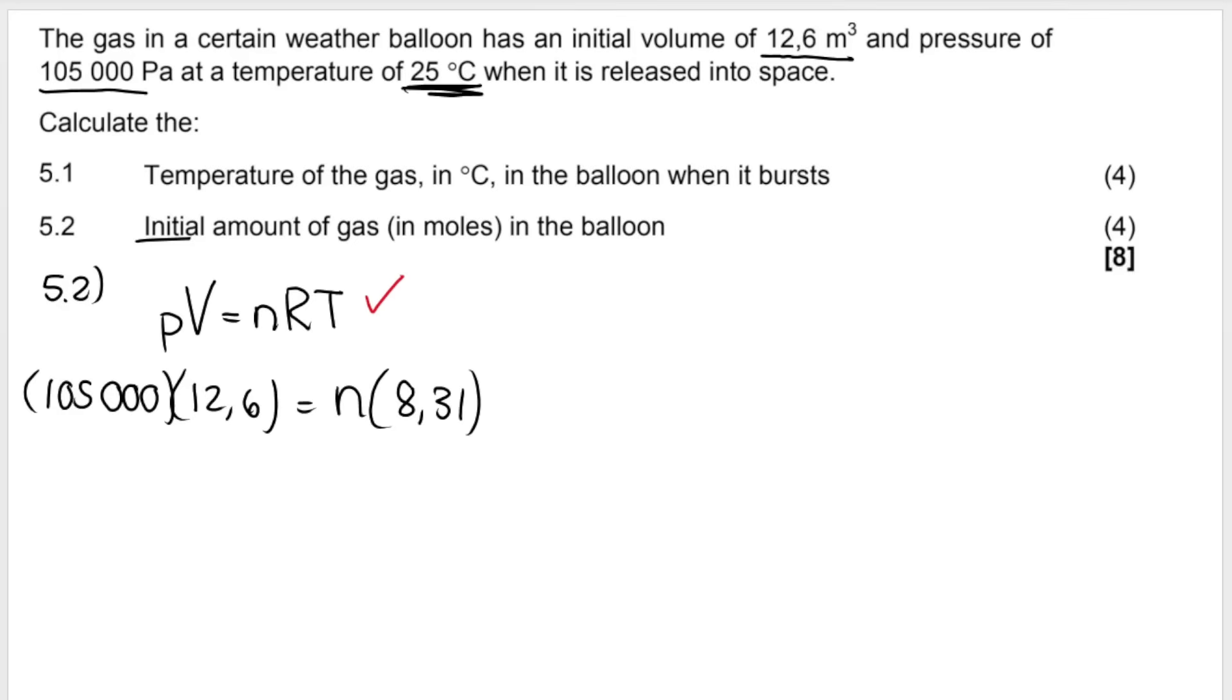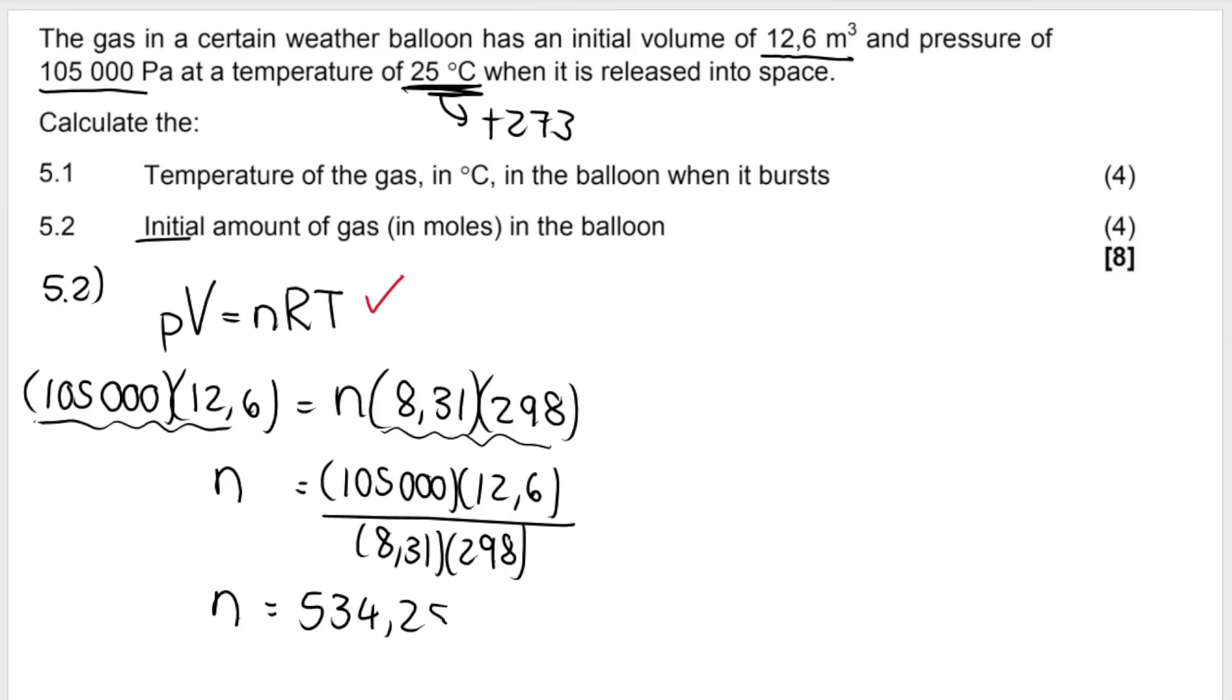And temperature must be in Kelvin. We already converted it earlier. By adding 273, we get 298. Remember, you're plus 273. And then you solve for N. So what you do is multiply these two together first and divide it by the product of these two. And rounded off to two decimals, we get 534.25 mol.